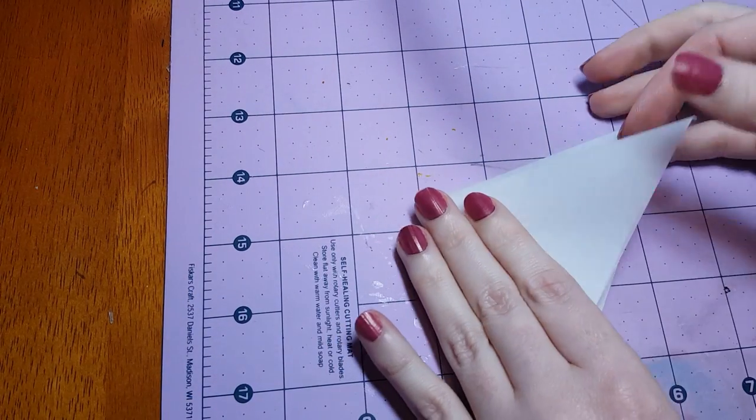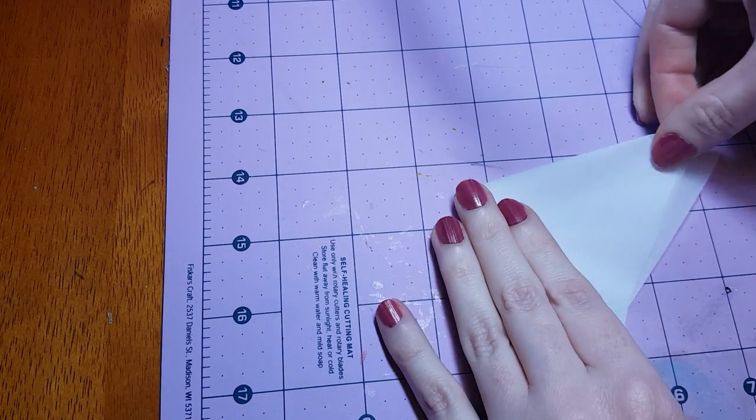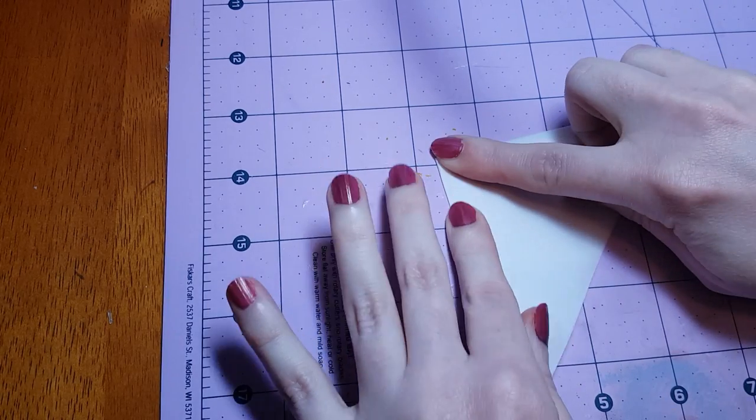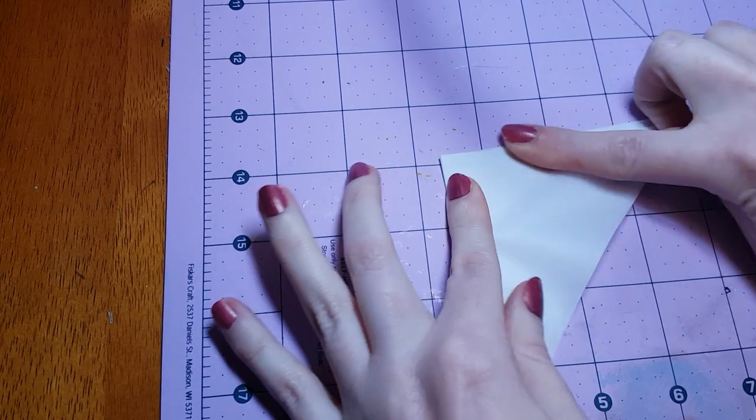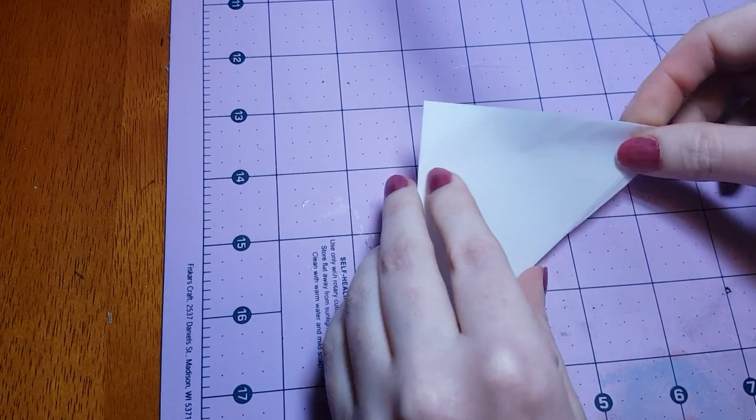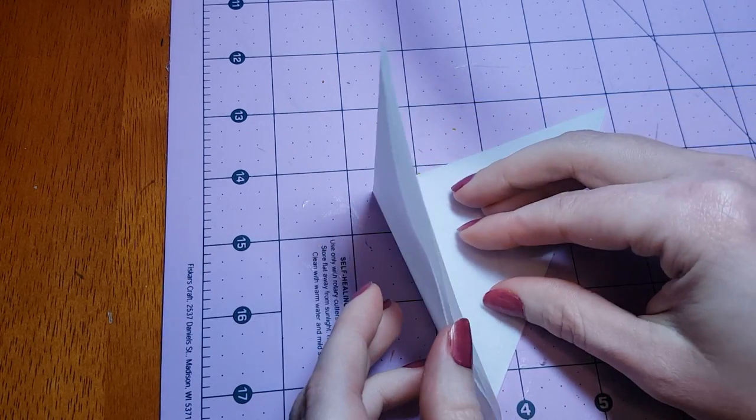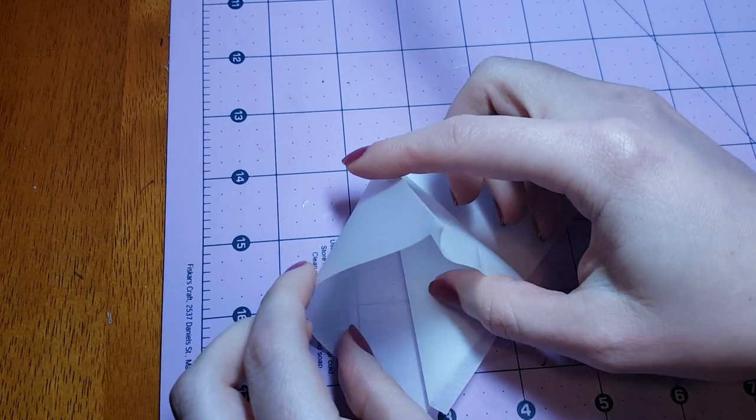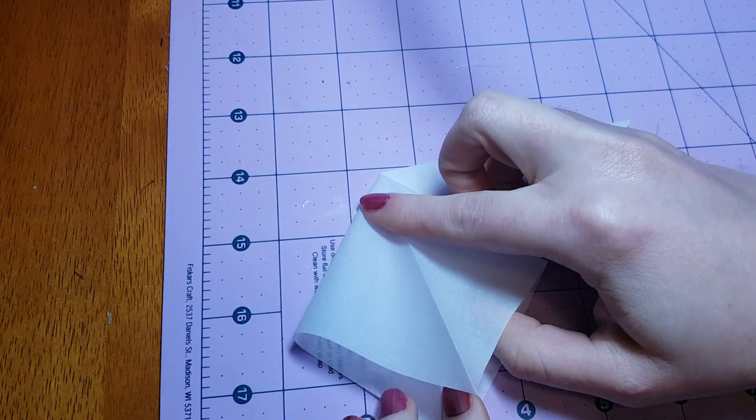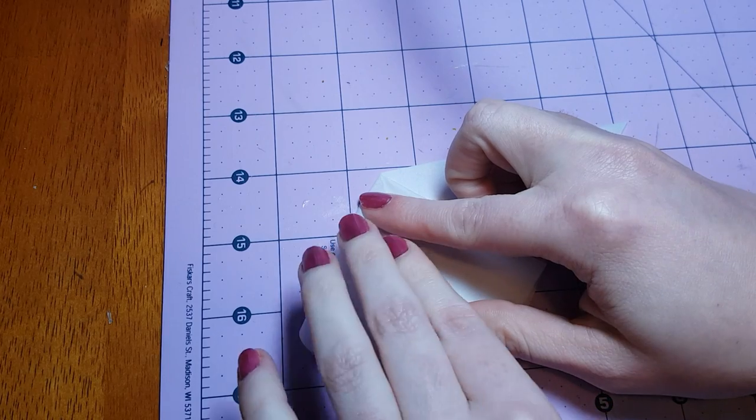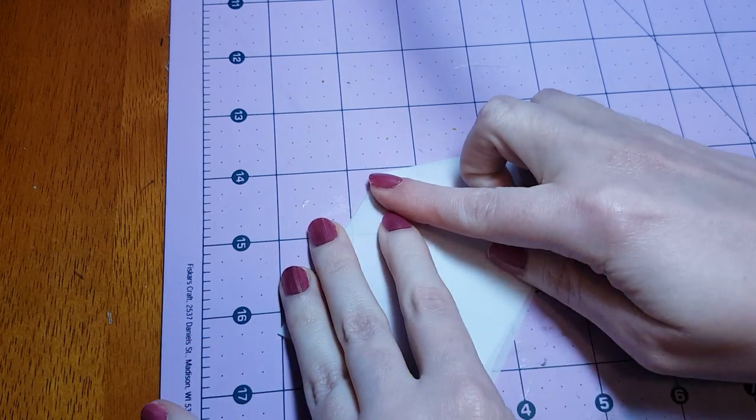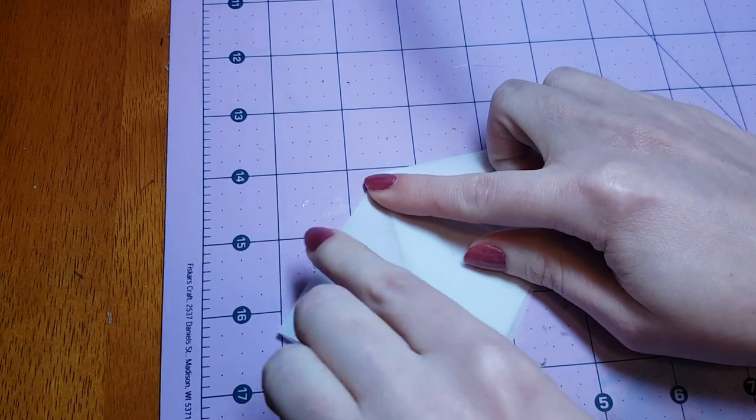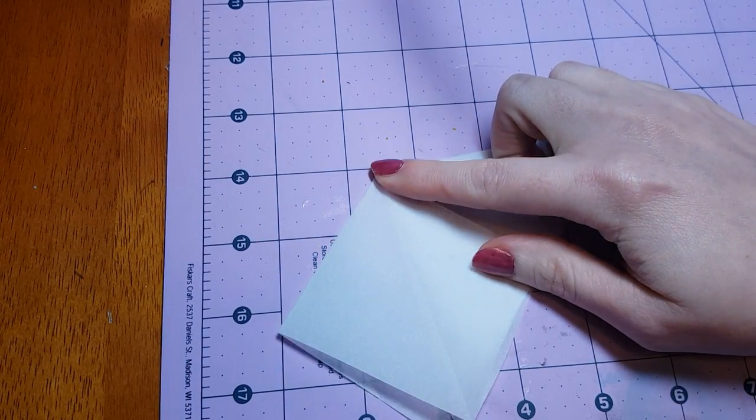Next, fold your triangle in half again, and then unfold it halfway, and then separate the two flaps of the triangle, and we're just going to squish this down to form a square on top here. We're going to be repeating this step several times if you missed it, so you'll get the chance to see it again.